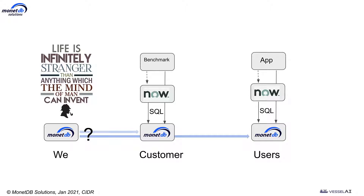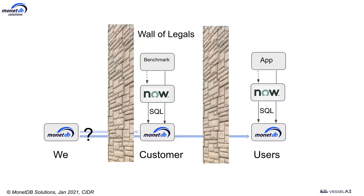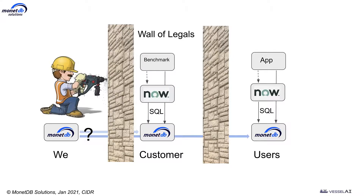However, there's a big stumbling block here. The big stumbling block are these walls — the walls built by the lawyers who forbid any data to be shipped from their users to the customer, or even from the customer to us. So what we have to do somehow is to drill a hole through these walls of legals in order to understand what MonoDB is actually doing.